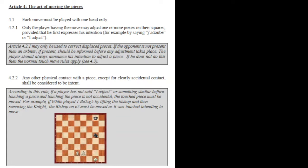Then 4.2.2: any other physical contact with a piece, except for clearly accidental contact — such as if he stumbled or fell over and knocked the pieces — shall be considered to be intent. So it was clear intent to play. There is also assistance giving a guideline: according to this rule, if a player has not said 'I adjust' or something similar before touching a piece, and the touch was not accidental, the touched piece must be moved. He realized he did touch the piece, it wasn't accidental, and he had to move the piece.